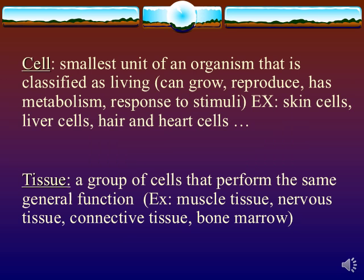Next up we hit cells and tissues. The cell is the first point at which we consider life beginning — life starts here. Remember at the beginning of the year we talked about life having all these different properties: it has to have DNA, be able to reproduce, grow, evolve, and so on. A cell is the first level in biology that actually fits all of that. Anything smaller than a cell can't possess all the traits of life, and therefore it's not considered alive. A cell can grow, reproduce, respond to stimuli. There are lots of different cells — your skin cells, liver cells, hair cells, heart cells.